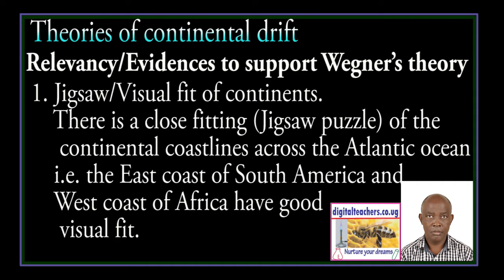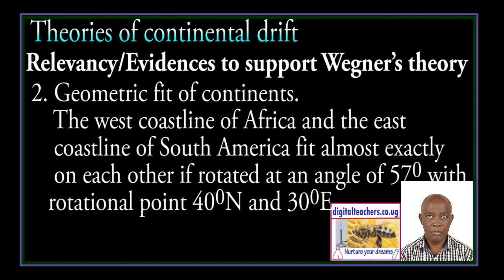Evidences to support Wegener's theory. Jigsaw visual fit of continents: there is a cross-fitting jigsaw puzzle of the continental coastlines across the Atlantic Ocean — that is, the East Coast of South America and West Coast of Africa have a good visual fit. Geometrical fit of continents: the West Coastline of Africa and East Coastline of South America fit almost exactly on each other if rotated at an angle of 57 degrees with a rotational point of 40 degrees north and 30 degrees east.